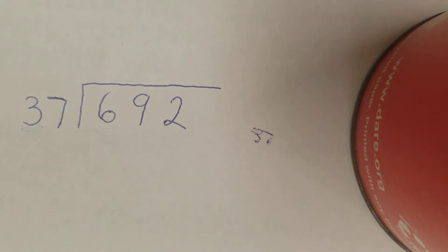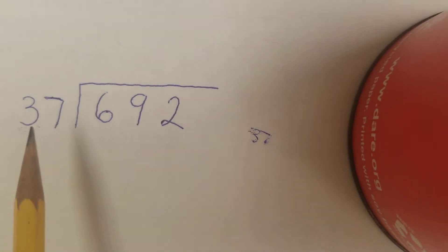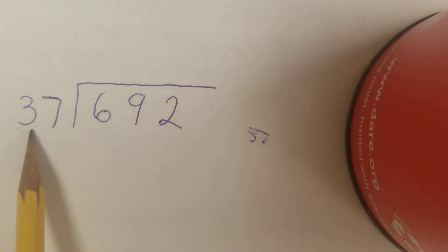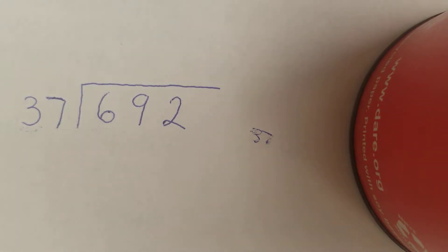Today we have a two-digit divisor. The process is the same. The biggest difference is we're skip counting by 37 this time instead of a single-digit number. I don't have my 37s memorized either, so we just have to come up with a game plan of how to attack this problem.